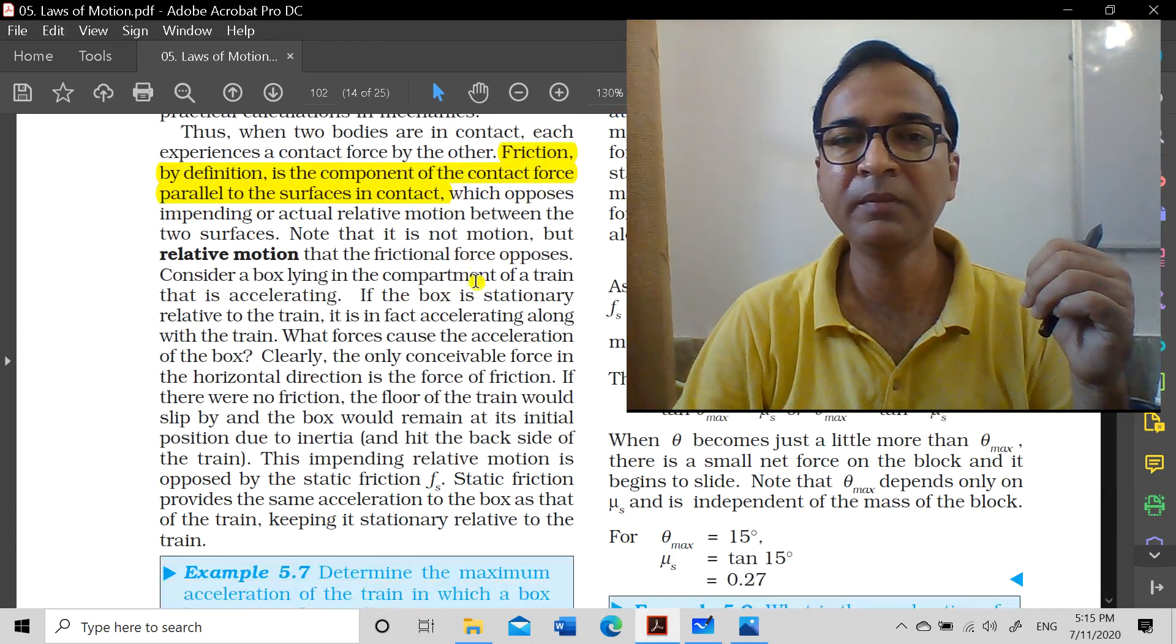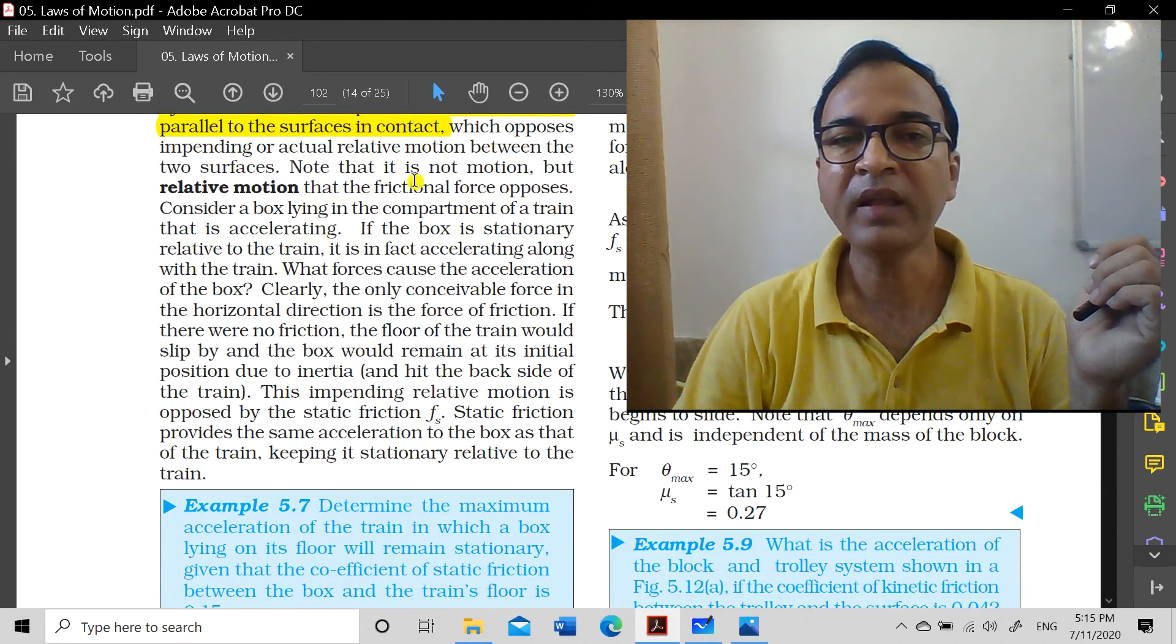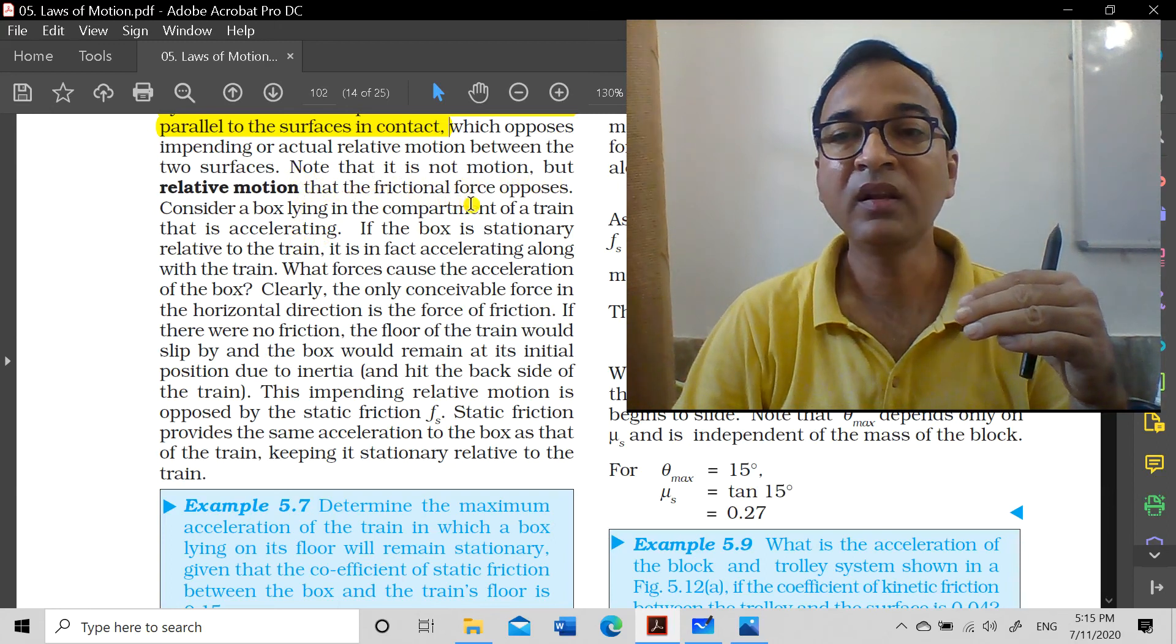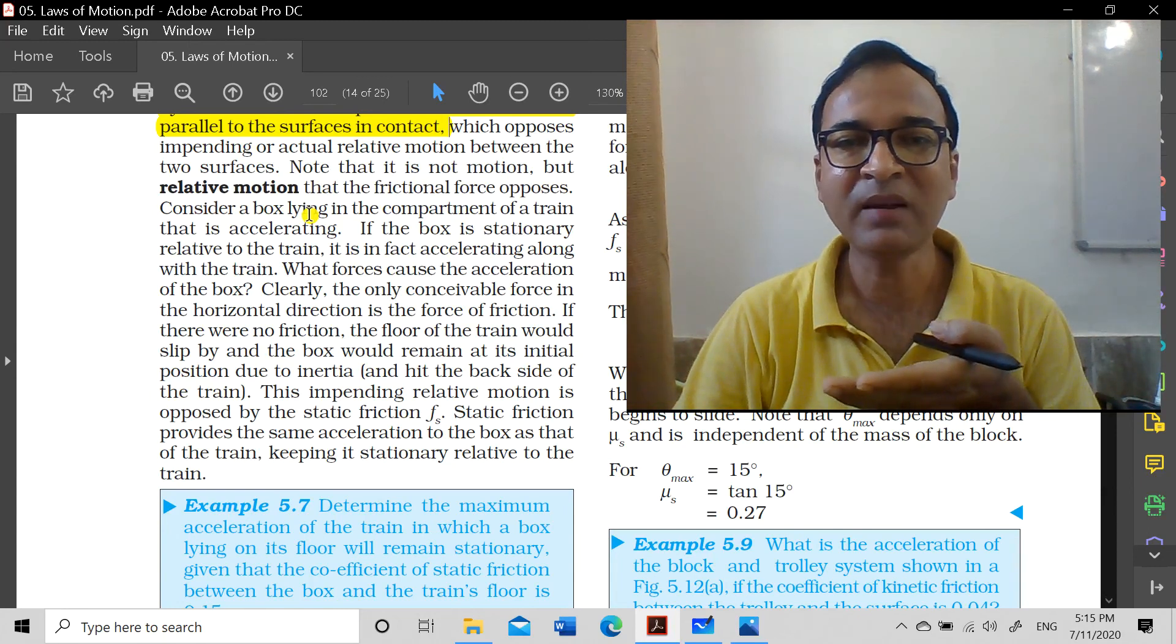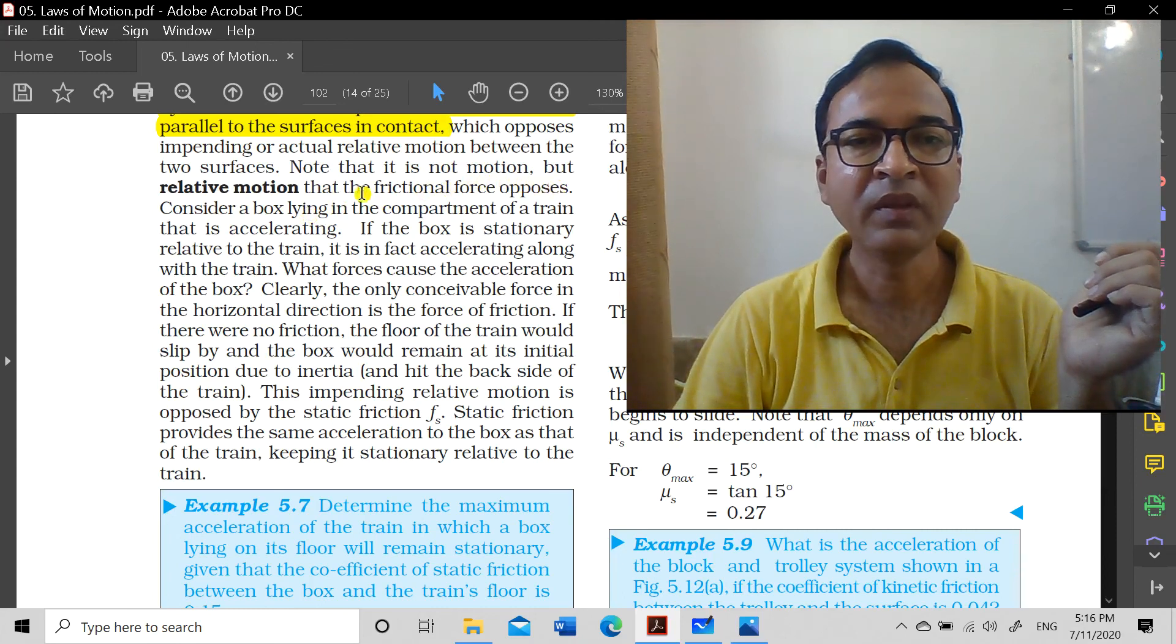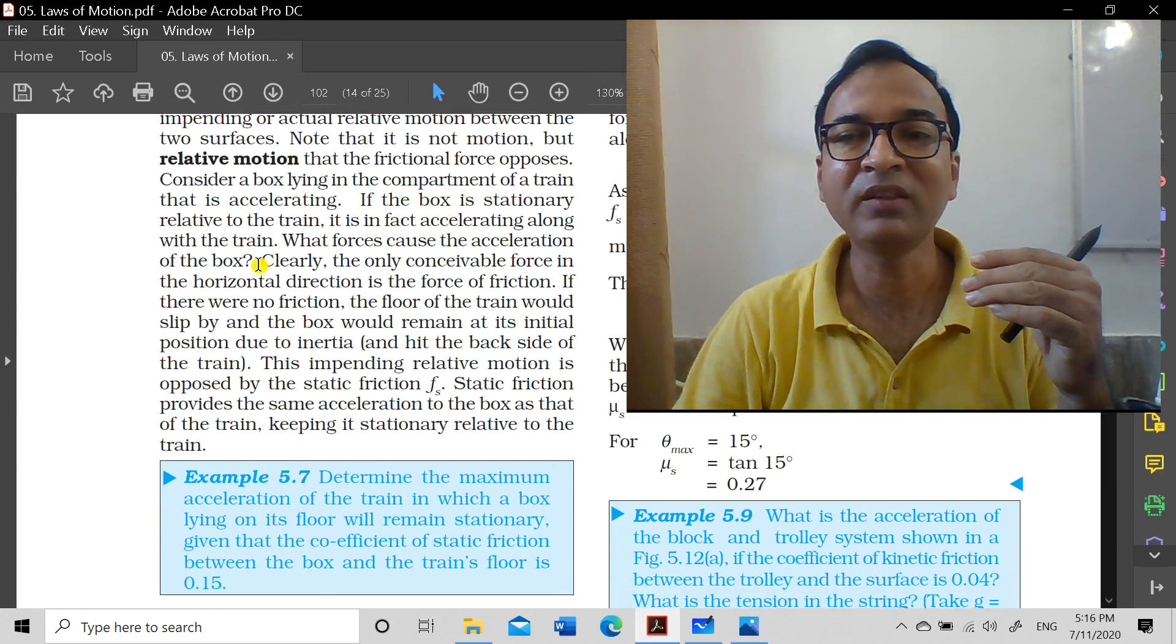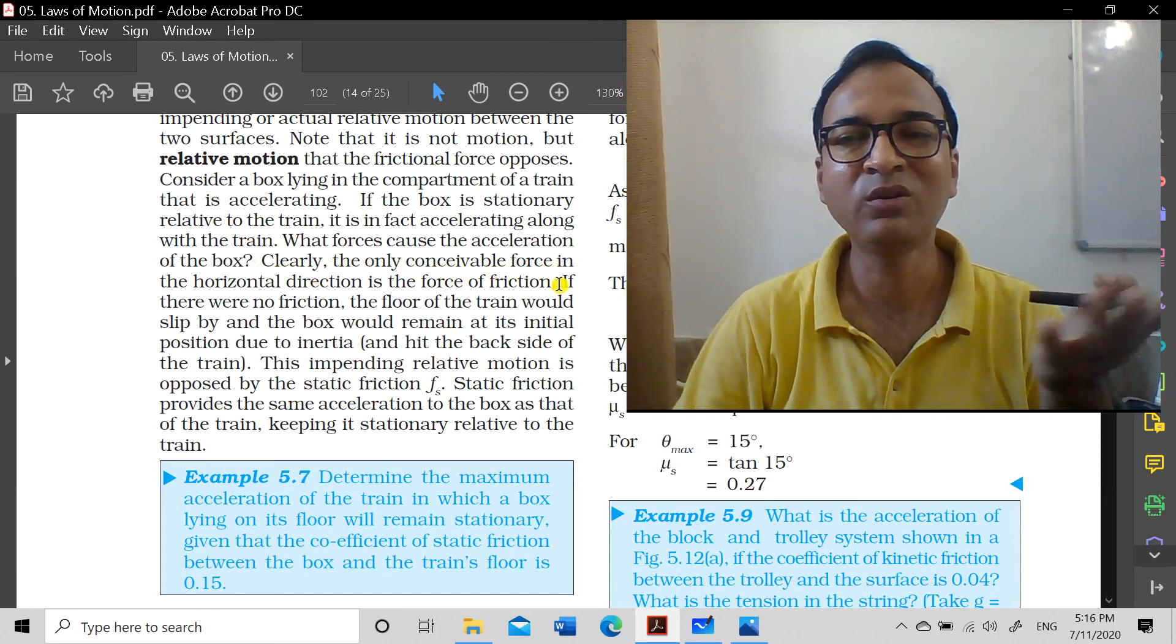Note that it is not motion but relative motion that the frictional force opposes. It doesn't oppose motion, it opposes relative motion. If the earth beneath you moves, it will also oppose that, even if you are at rest. Consider a box lying in the compartment of a train that is accelerating. If the box is stationary relative to the train, it is in fact accelerating along with the train. What forces cause the acceleration of the box? If you're asked whether it's the train's force or frictional force - clearly, the only conceivable force in the horizontal direction is the force of friction. No other force is visible acting on it.